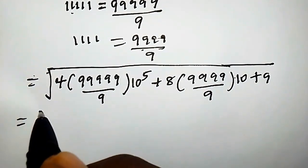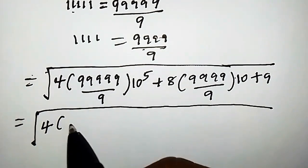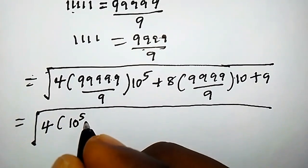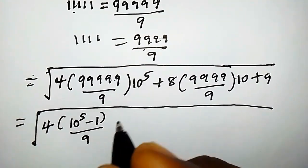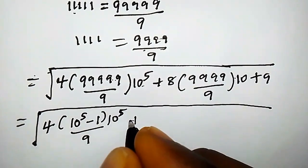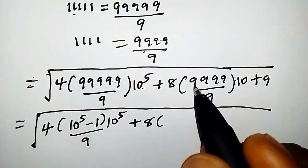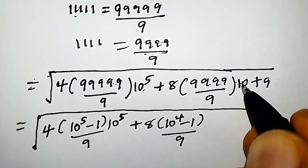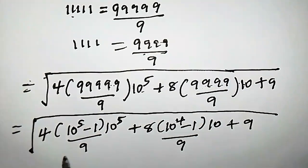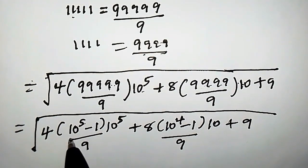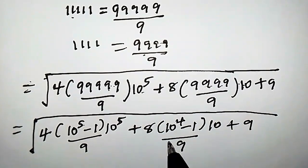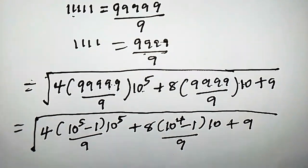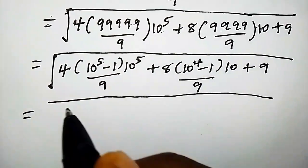Proceeding further, we rewrite the numerators using the identity: 99999 equals 10 to the power of 5 minus 1, and 9999 equals 10 to the power of 4 minus 1. This is because 10^5 is 100000, and 100000 minus 1 gives 99999; and 10^4 is 10000, so 10000 minus 1 gives 9999. So we now have the square root of 4 times (10^5 − 1)/9 times 10^5, plus 8 times (10^4 − 1)/9 times 10, plus 9.